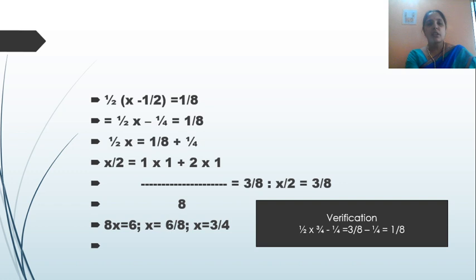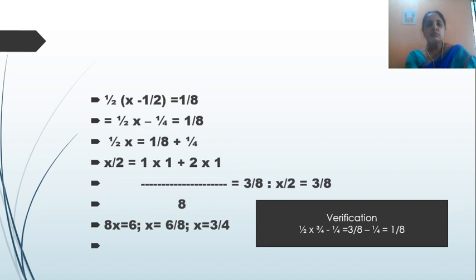Now, x/2 is on the left-hand side. I am going to transpose minus 1/4 from LHS to RHS, so it becomes plus 1/4. The equation becomes x/2 equals 1/8 plus 1/4. Taking the LCM of 8 and 4, which is 8, this gives me 3/8. So x/2 is equal to 3/8.